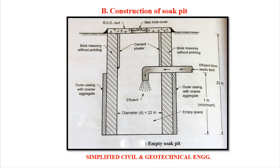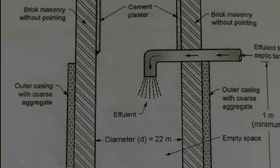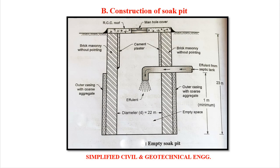Now we will discuss our next point which is Construction of Soak Pit. A Soak Pit is a hollow circular pit. The total depth of the circular pit varies from 1.2 meter to 1.8 meter, that is 4 foot to 6 foot. The effluent from the septic tank falls in the pit and it is allowed to be soaked or absorbed in the surrounding soil.